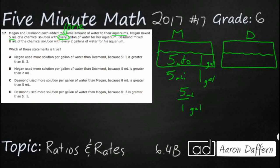Desmond mixed apparently the same chemical solution but the ratio is different. So we've got eight to two. So eight milliliters to two gallons.